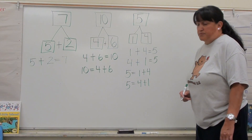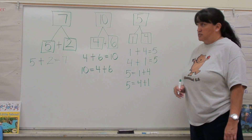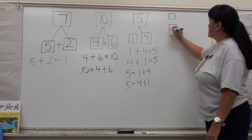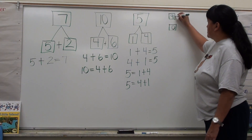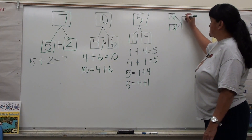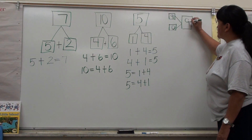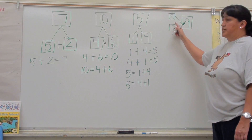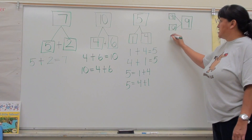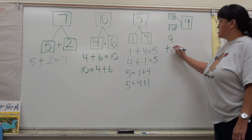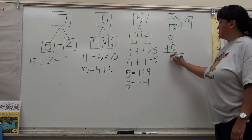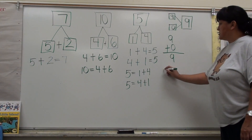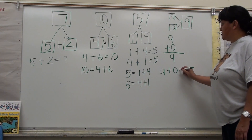I'm going to do one more. This is where we use the horizontal number bond. If we have our parts here — I have a nine and a zero — here are my bonds and here is my whole. My whole is going to be nine. My number sentence using the parts of the number bond is nine plus zero equals nine, and I can write it both ways: nine plus zero equals nine.